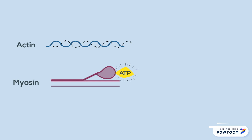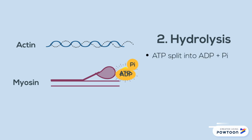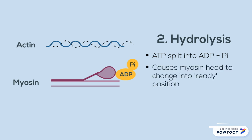The next step is known as hydrolysis. In hydrolysis, the ATP molecule is split into an ADP molecule and a phosphate molecule. This causes the myosin head to change into a ready position and bind to actin.